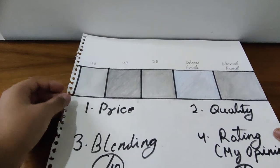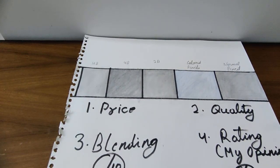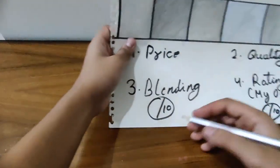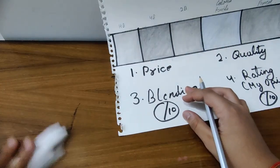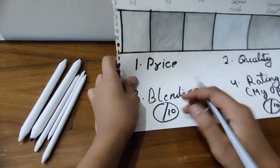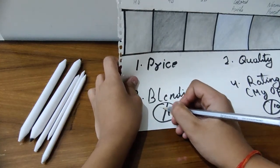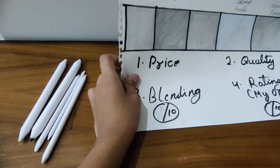Okay, so now I am going to rate the blending out of 10. So I will give these stumps 8 out of 10 in the matter of blending.